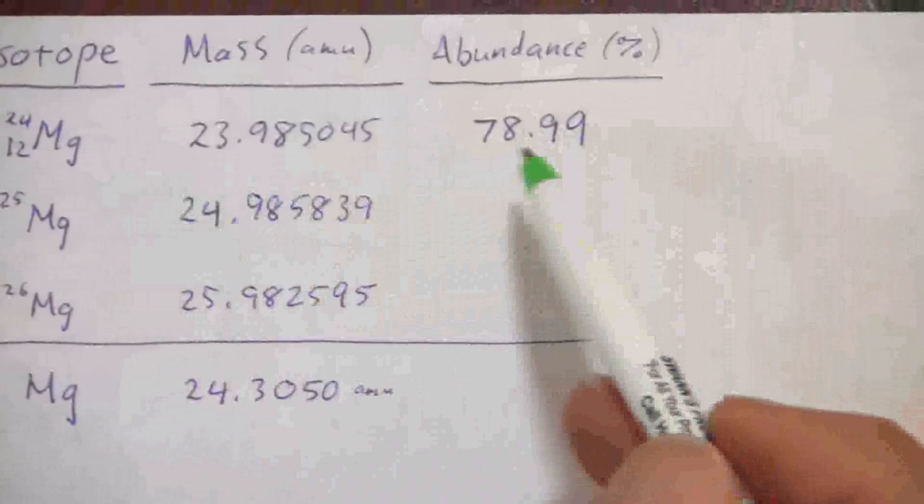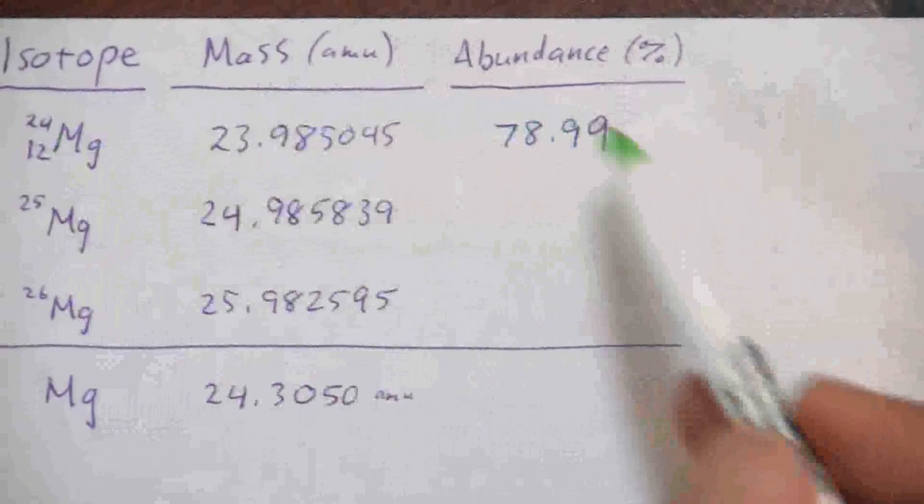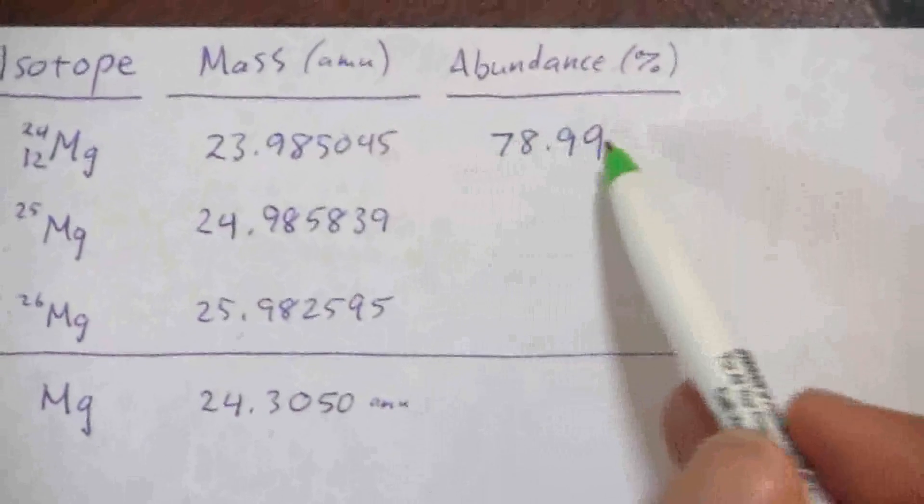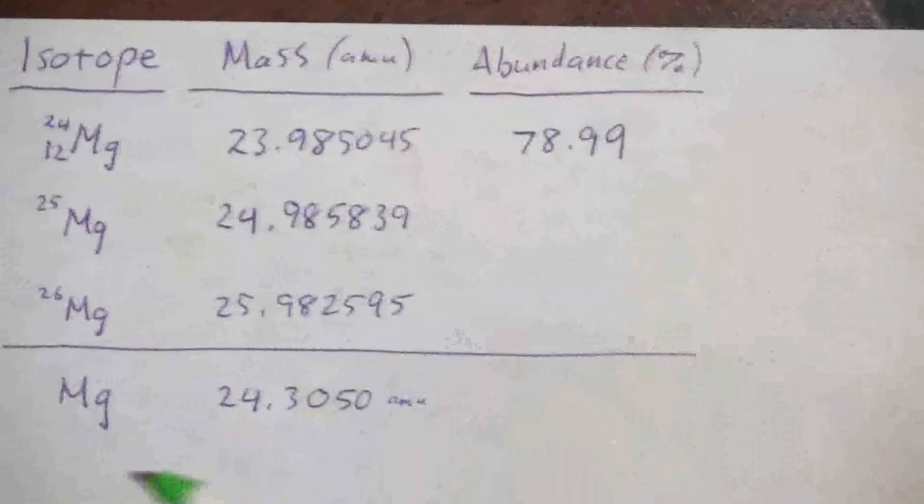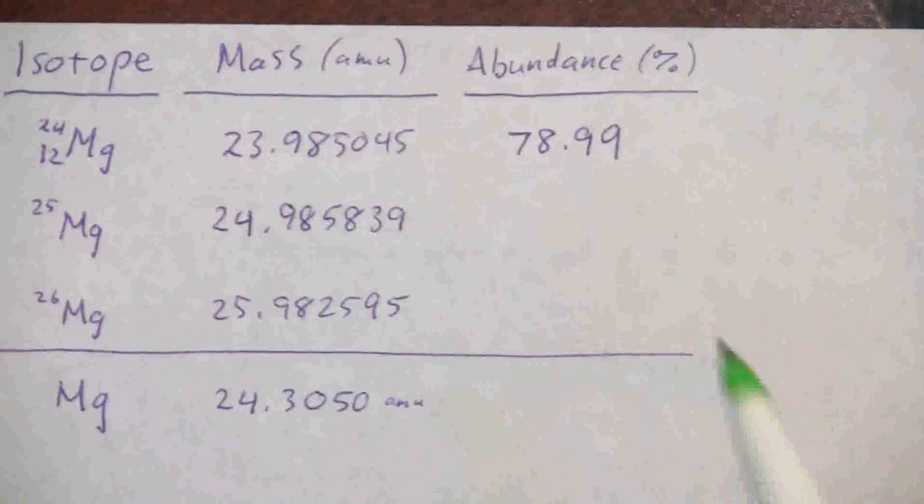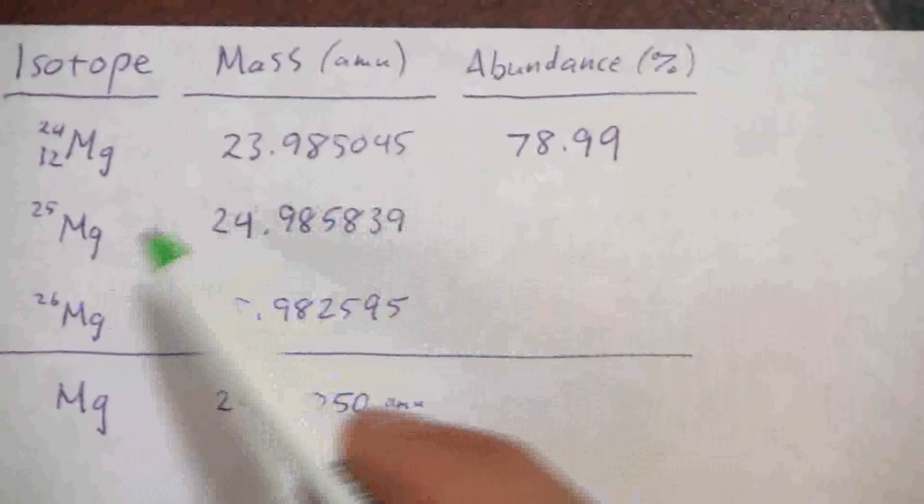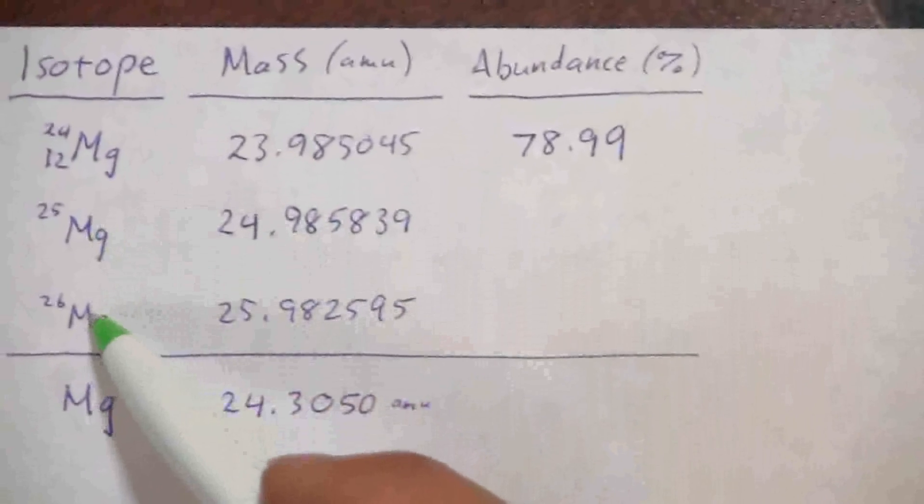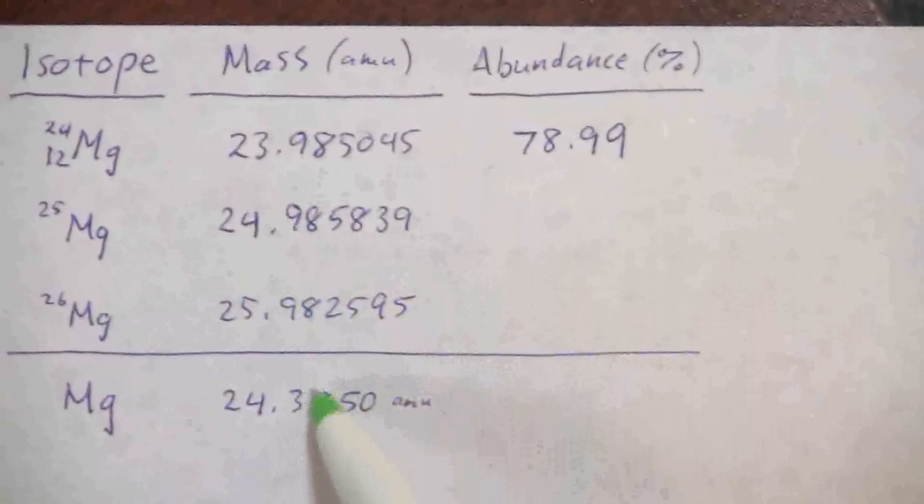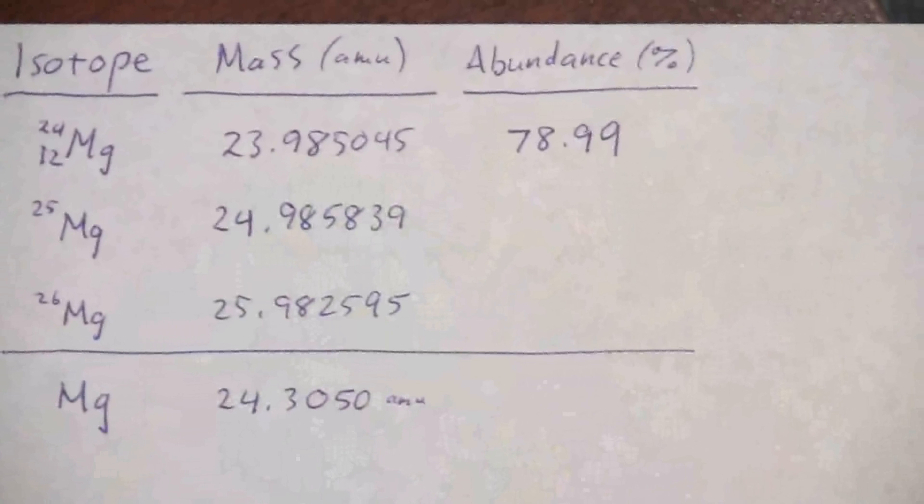In the case of magnesium, the abundance for magnesium 24 is about 79%. So it's considerably less than 100, and so that's kind of where that comes from. And there's a more significant amount of these heavier isotopes to bring up that weight a little bit more from the 24.